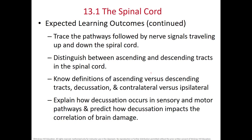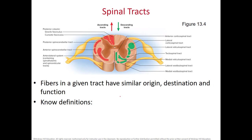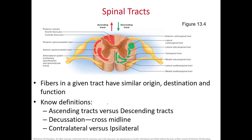On your spinal cord we'll be looking at these tracts. You do not have to know all the separate names and locations of ascending and descending tracts — just realize that within a tract the neurons usually have a similar origin, destination, and function. What you do need to know are certain definitions: the difference between ascending and descending tracts, the term decussation — which means crossing over the midline to the opposite side — and the terms contralateral (going to the opposite side) and ipsilateral (staying on the same side of your spinal cord).